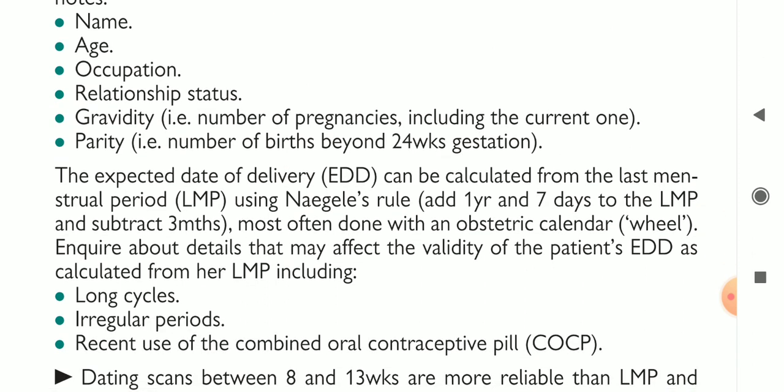The expected date of delivery can be calculated from the last menstrual period, but it is not very specific because in different ladies the menstrual cycle may vary — some may have shorter and some longer cycles. This variation will not give a specific point about the expected date of delivery.